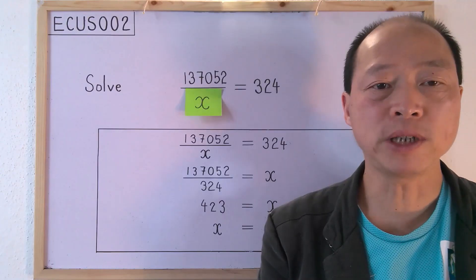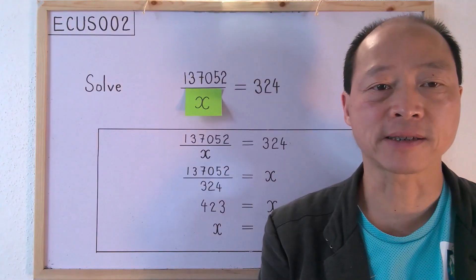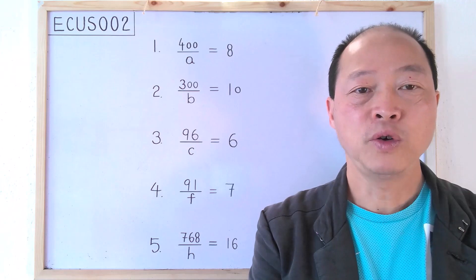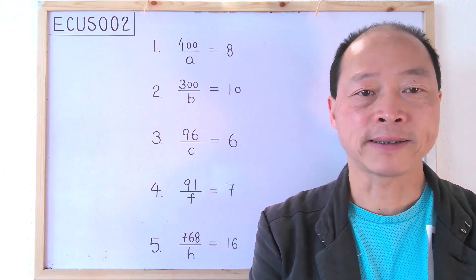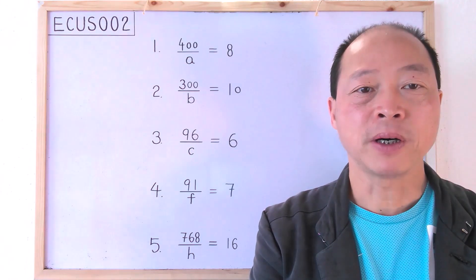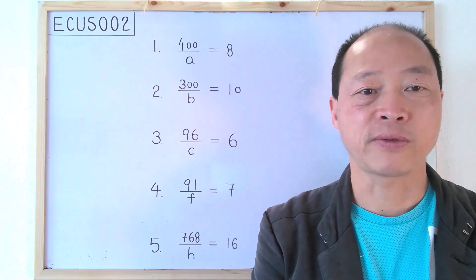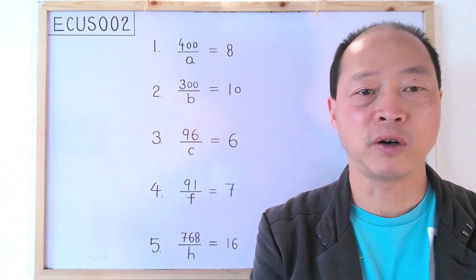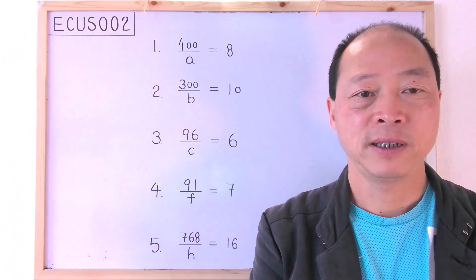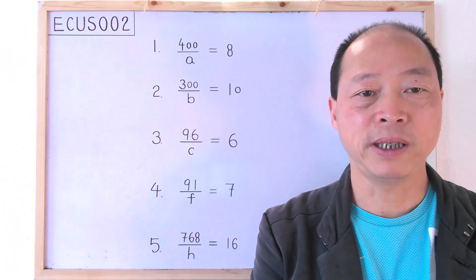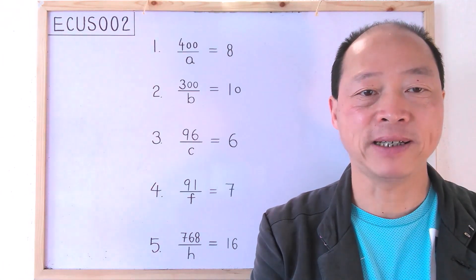Let me give you five more equations to solve as exercise. You may assume that the number on the right of each equation is a factor of the numerator on the left. The answers will be given at the end of this video.